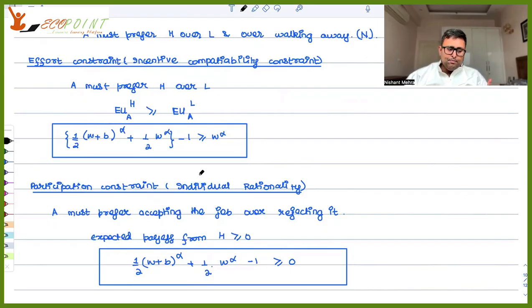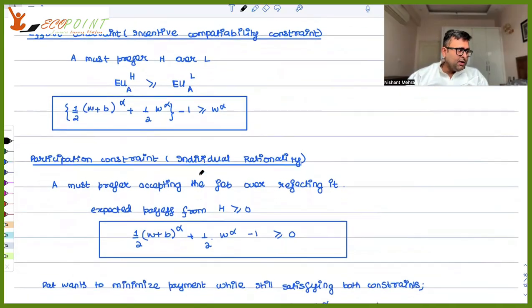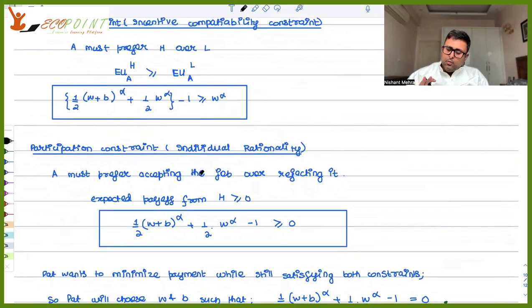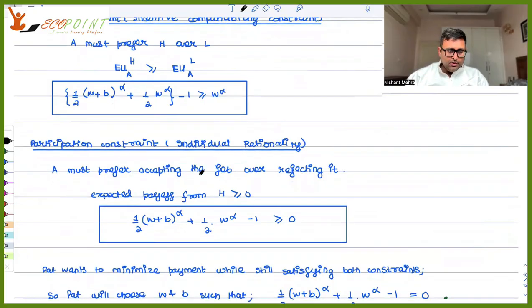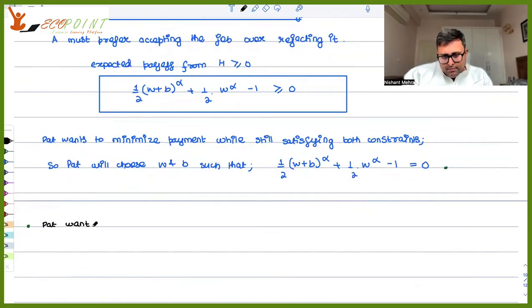Ellen is the agent and Pat is the principal. Pat wants to pay as minimum as possible. He wants Ellen to participate in the job and also to put in high effort. So Pat wants to pay as low as possible.